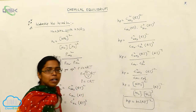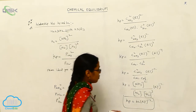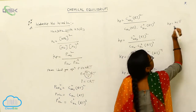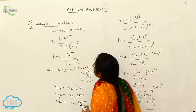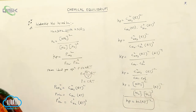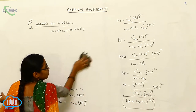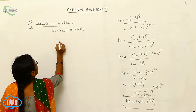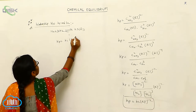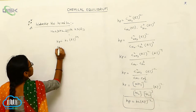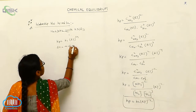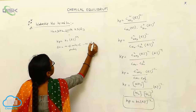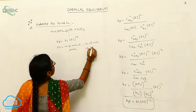It is the broad method. We already know the shortcut method. The shortcut method uses the relationship: Kp is equal to Kc into RT to the power of delta N. Delta N is equal to the number of moles of products minus the number of moles of reactants.